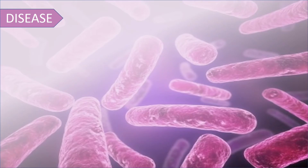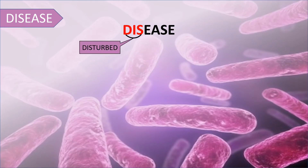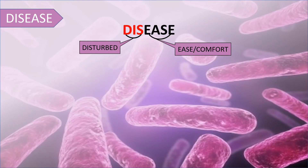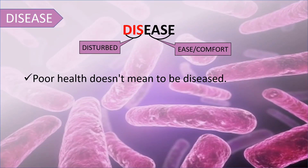Now let us see what 'disease' means. Disease is a term made up of two words: 'dis' and 'ease.' 'Dis' means disturbed or discomfort, and 'ease' means comfort. So disease refers to a condition in which we are not in comfort — we are in discomfort. Importantly, poor health does not always mean we are diseased; these are two different things.